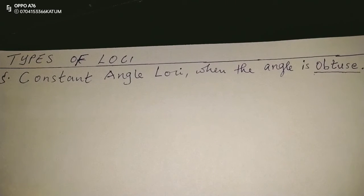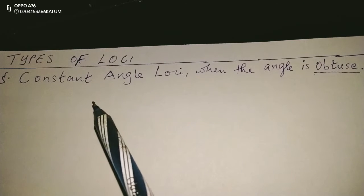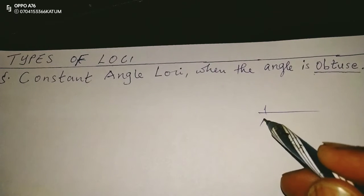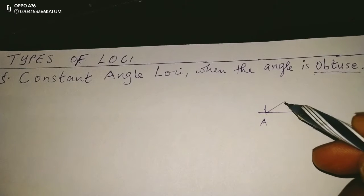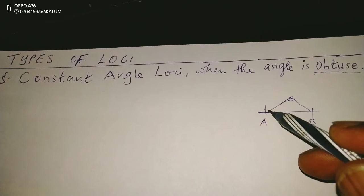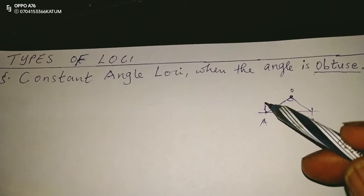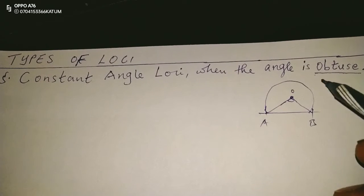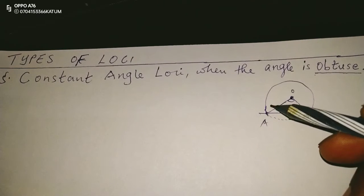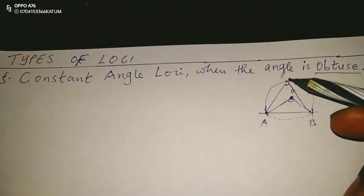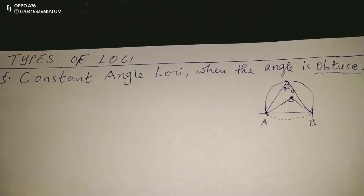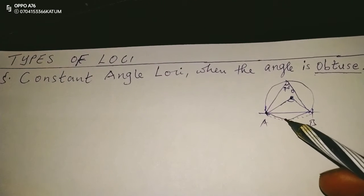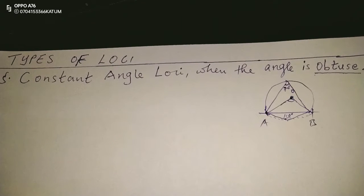Just a recap of the first type of constant angle whereby it is acute. If we take a line AB as a chord, we require a center which produces an angle twice the angle required at the circumference. With our center O, we can construct the angle loci. But now it should be noted that in case we construct the whole circle using center O, at the circumference we are having an angle, let's say 70 degrees. Now on the other side of the circle we're going to have 110 degrees because the angles are supposed to be supplementary.